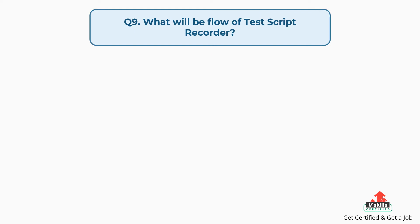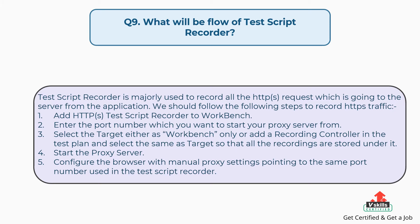Question 9: What will be the flow of test script recorder? The test script recorder is majorly used to record all HTTP/S requests going to the server from the application. Steps: first, add the HTTP/S Test Script Recorder to Workbench; second, enter the port number for the proxy server; third, select the target as Workbench only or add a Recording Controller in the test plan; fourth, start the proxy server; lastly, configure the browser with manual proxy settings pointing to the same port number.